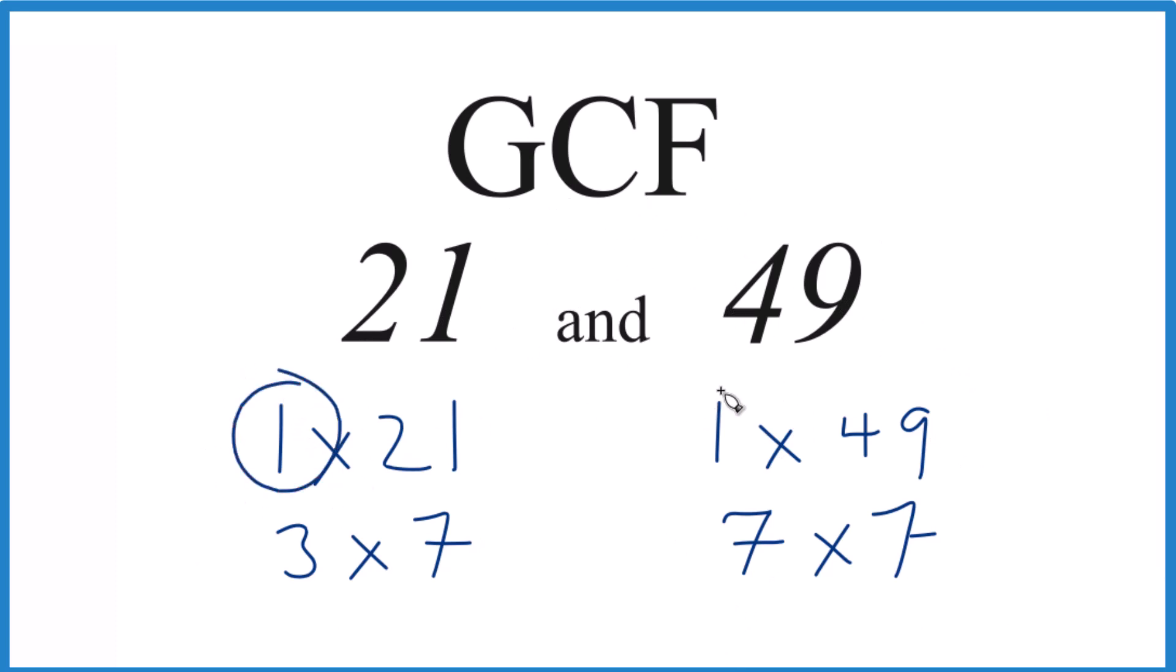So 1 is a common factor, but also 7, and 7 is greater. So we can say that the greatest common factor, the factor that goes into both 21 and 49, is 7.